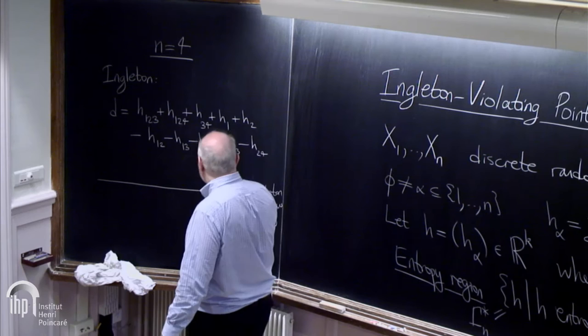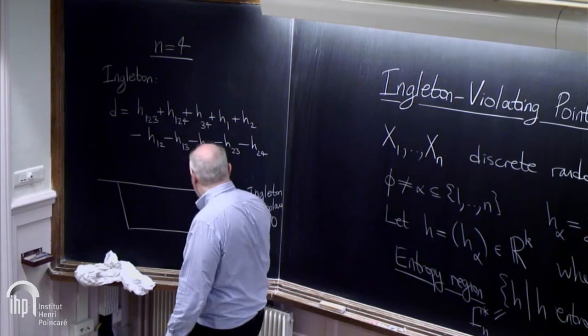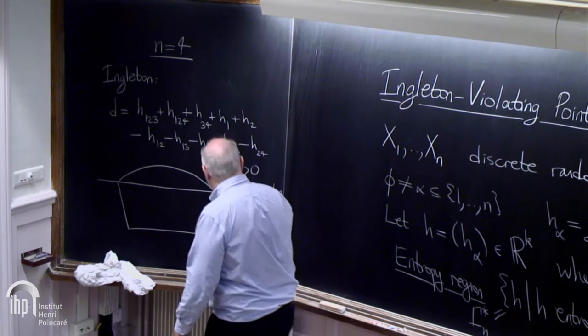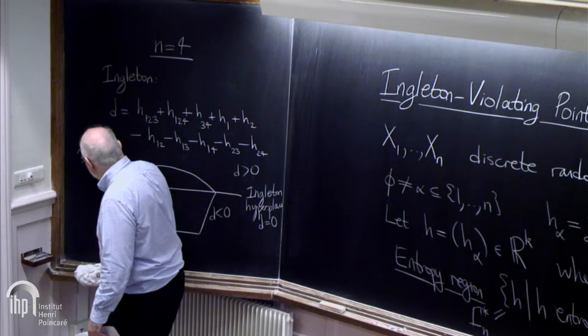We have the Ingleton hyperplane given by d equals 0. The way I've arranged it, the Ingleton satisfying points correspond to d less than 0. The Ingleton violating points are on this side of the hyperplane, d greater than 0.